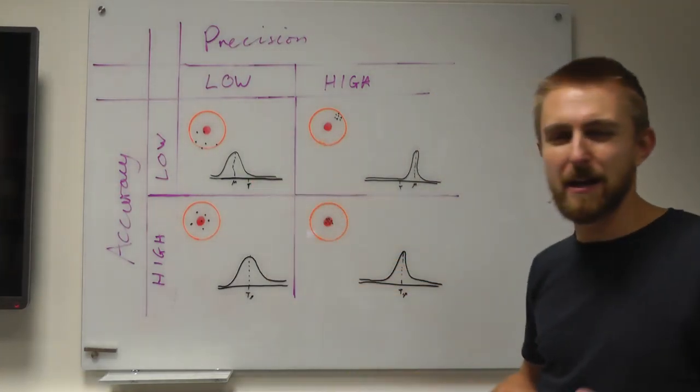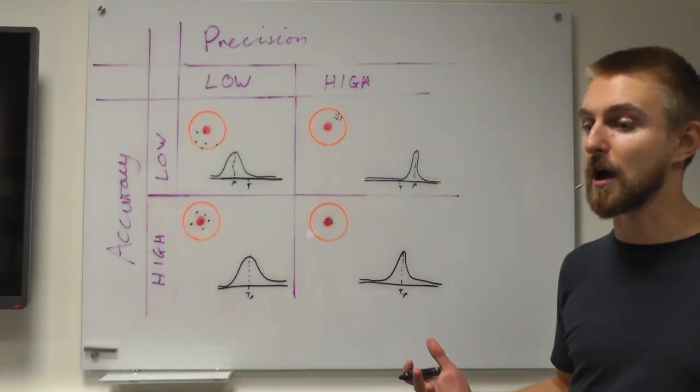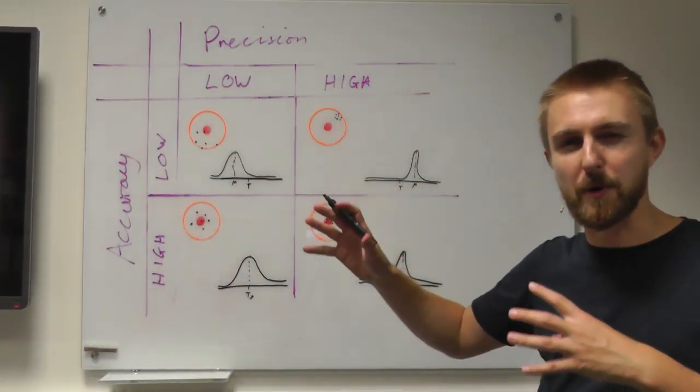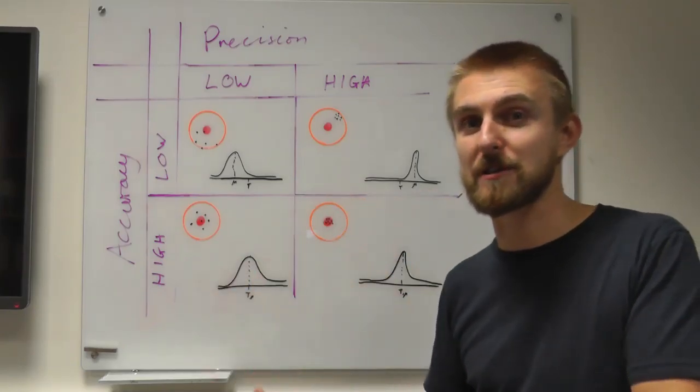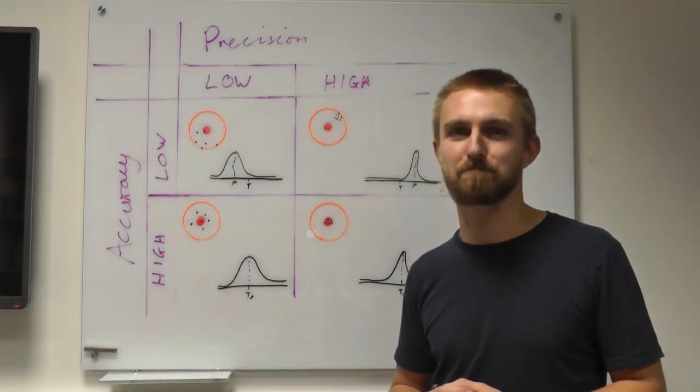So these four examples, again, hopefully just reinforce this concept. So you're going to come across, over the course of the next three years of your degree, lots of examples where you're given data, and you're going to have to be able to distinguish between high accuracy and high precision reporting of results. And I hope that's made it clearer.